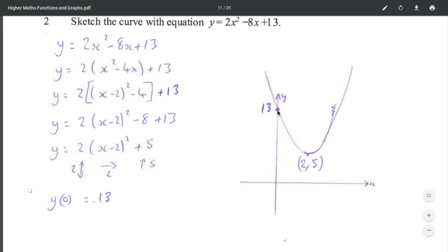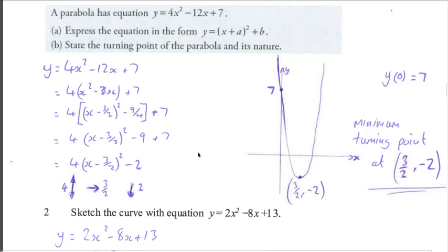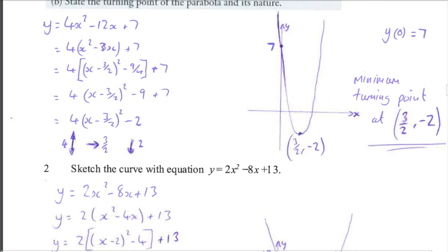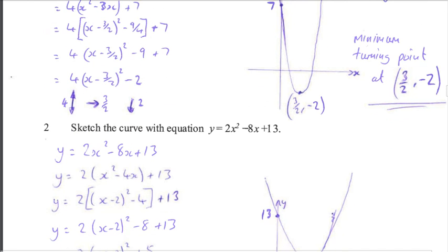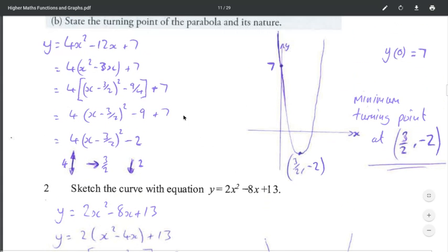Okay guys, so just recapping what we've done there. We have completed the square to get the given equation into a suitable format to sketch. And once we've done that, we can sketch the parabolas, or if we're only asked for the minimum turning point, we could read it straight from here. But there's no harm in sketching for a bit of practice anyway.